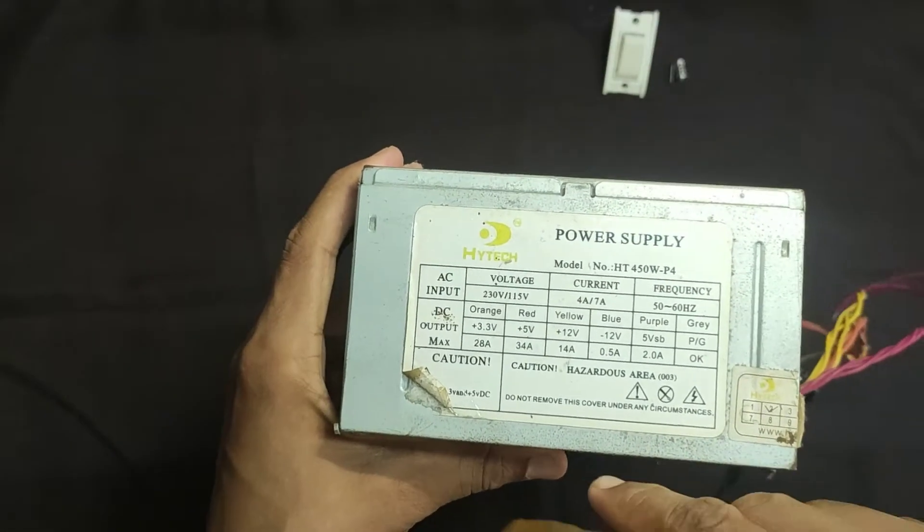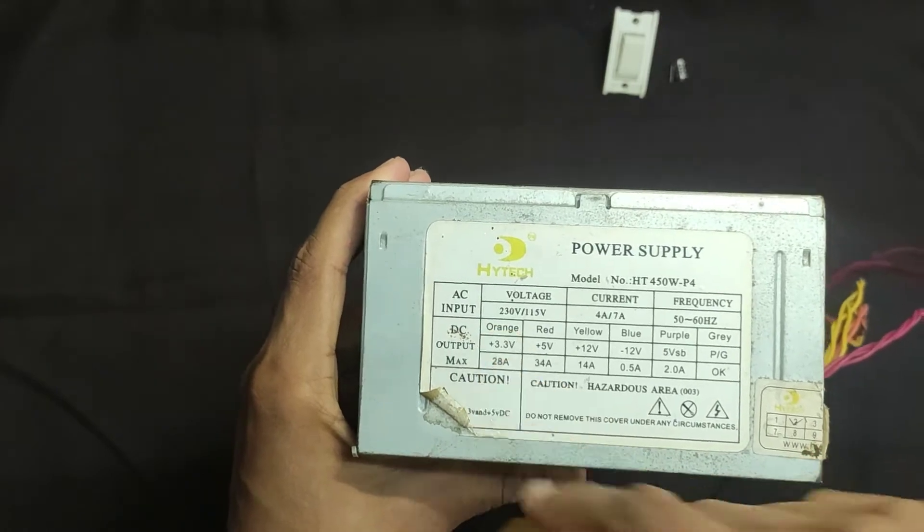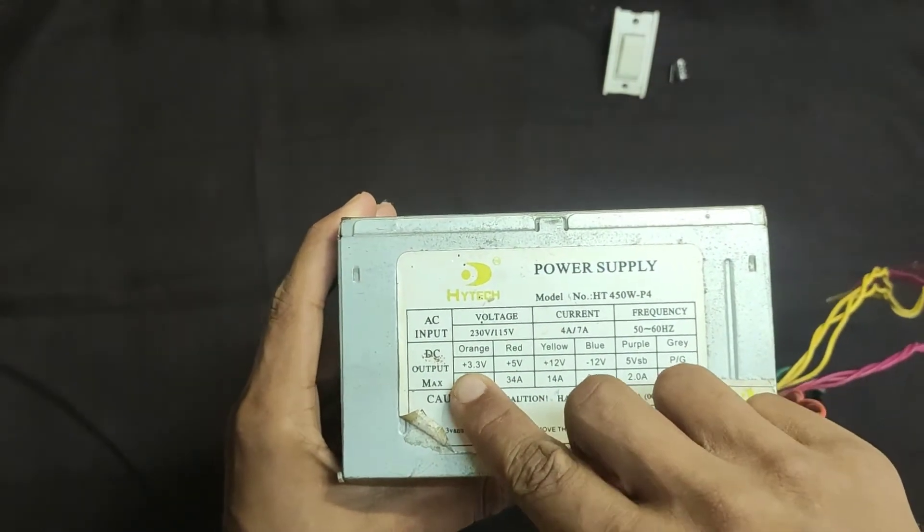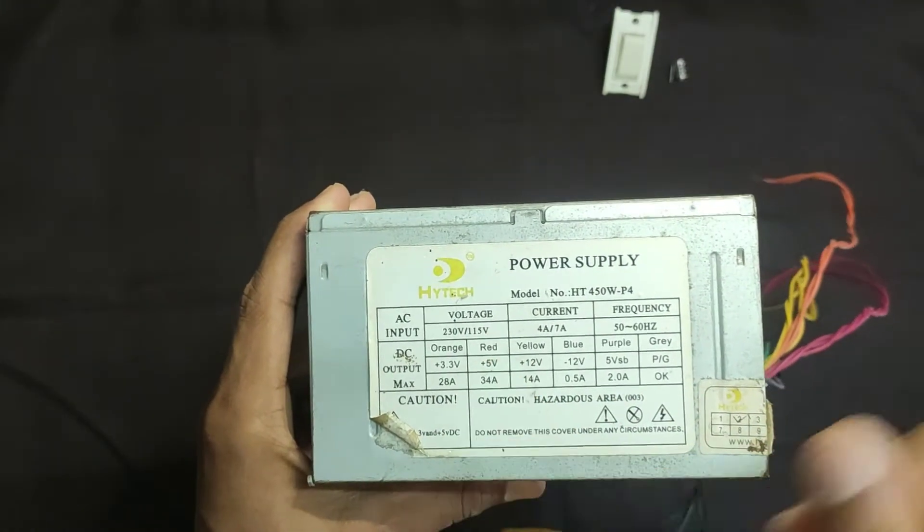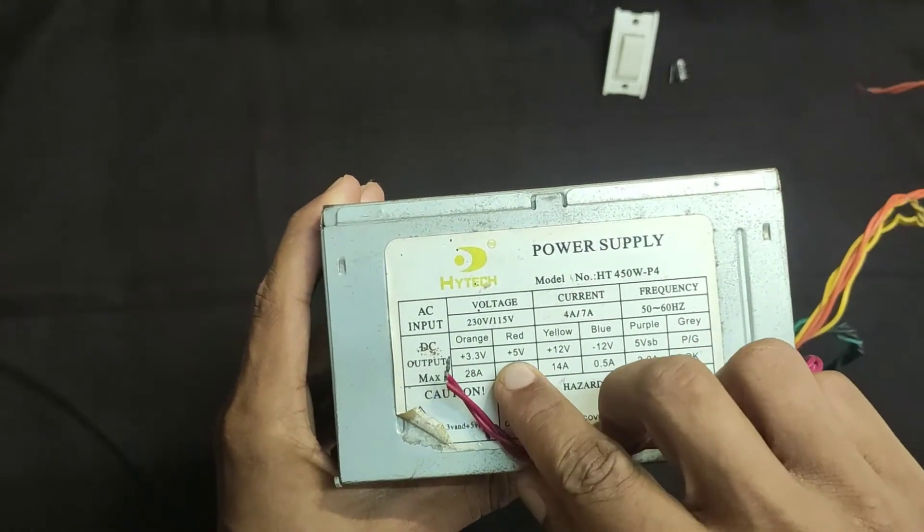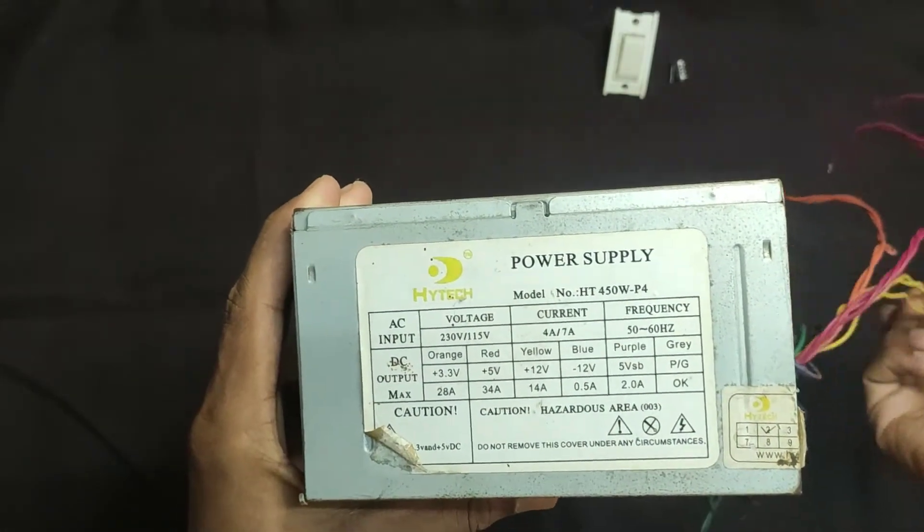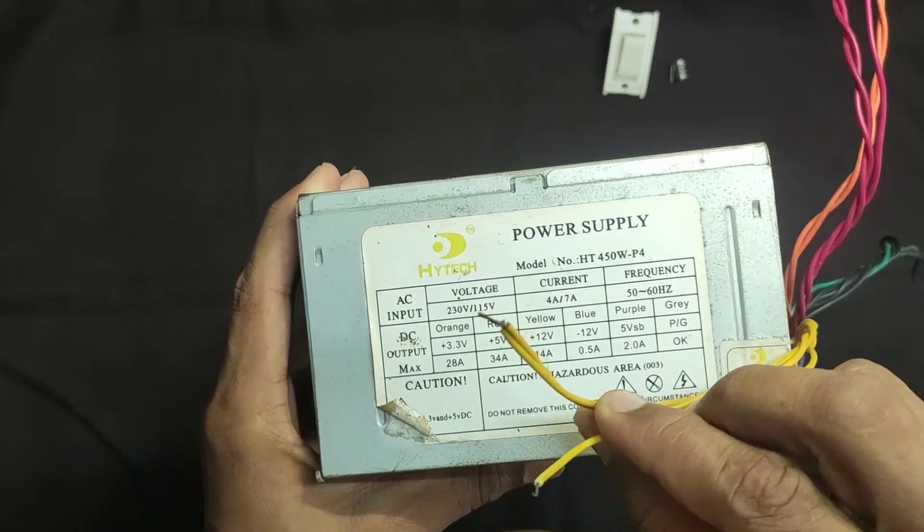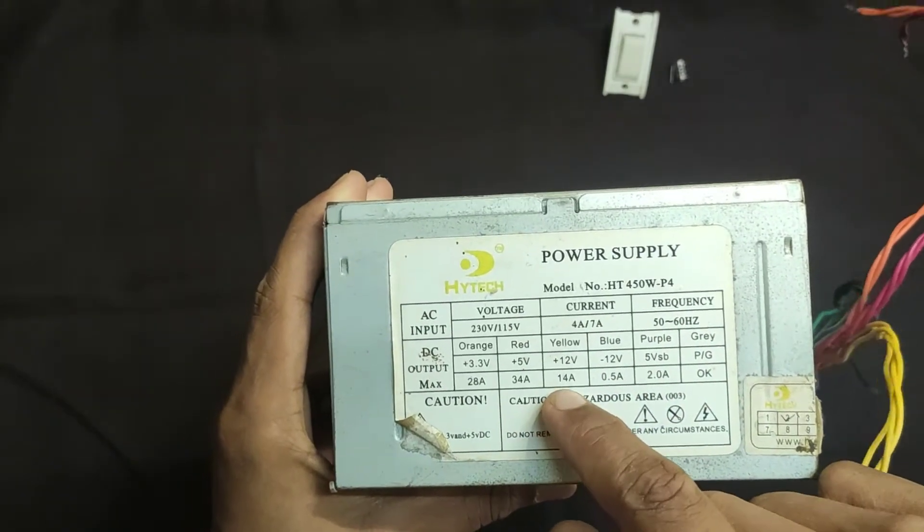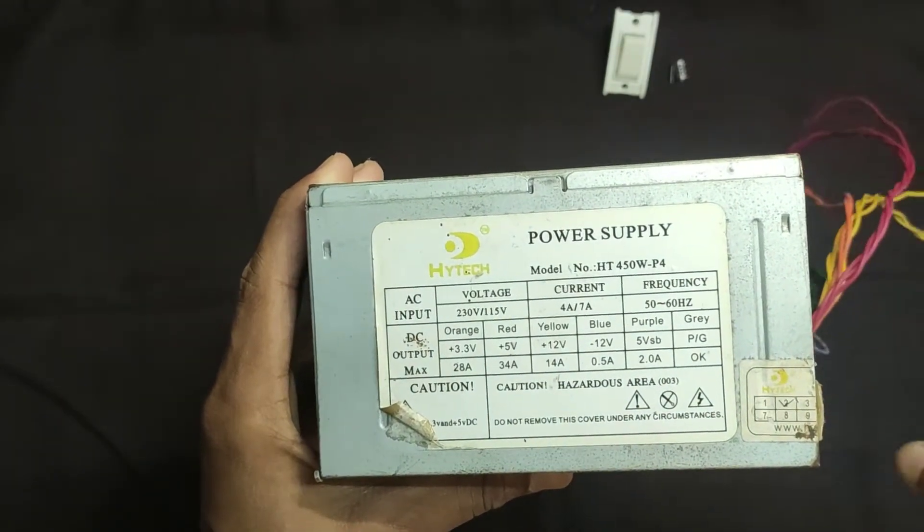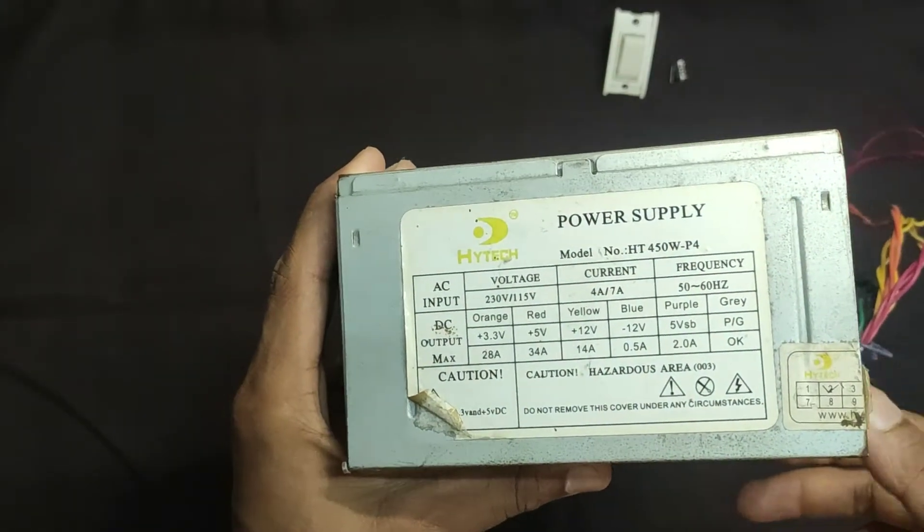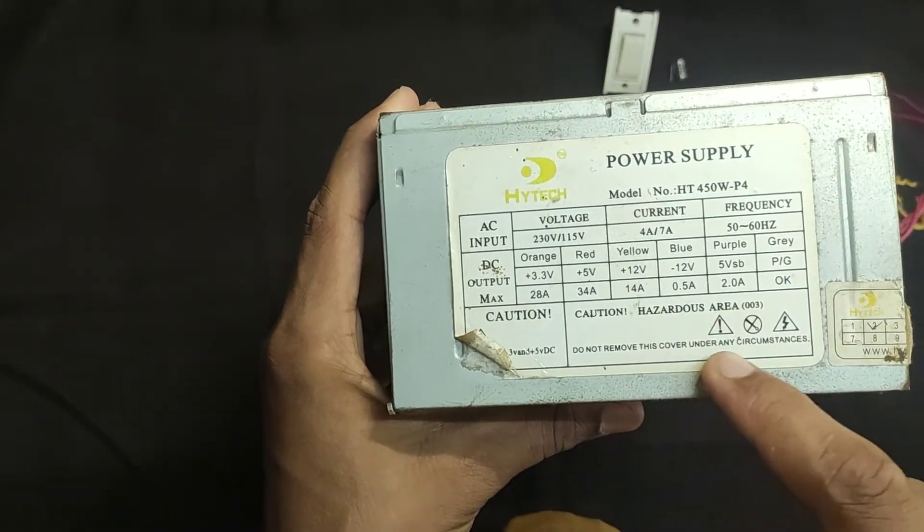You can see that orange wire produces an output of plus 3.3 volts and its maximum current is 28 ampere. And the red wire produces an output of plus 5 volts and its maximum current is 34 ampere. And the yellow wire produces an output of plus 12 volts and its maximum current is 14 ampere. And remaining three are unnecessary because of their low current and some issues.